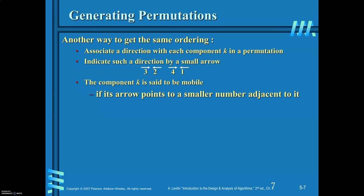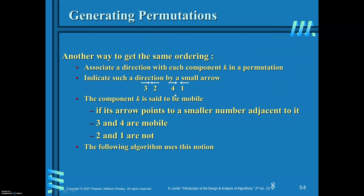Another method to find all possible permutations is the Johnson-Trotter algorithm. Before that, we define a mobile integer: associate a direction (arrow) with each component k in a permutation. The component k is called mobile if its arrow points to an adjacent smaller number. For example, if 3's arrow points to 2 (smaller than 3), then 3 is mobile. Similarly, if 4's arrow points to 1, then 4 is mobile. Here, 3 and 4 are mobile integers; 1 and 2 are not.